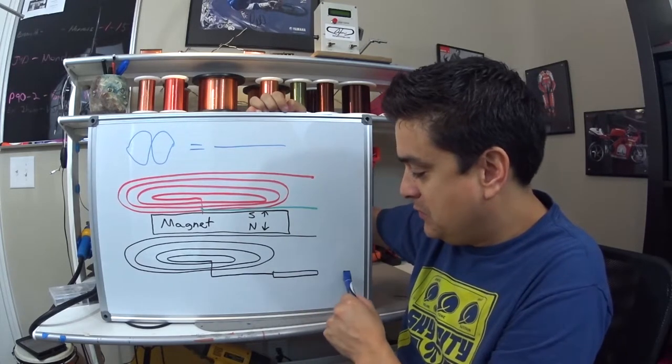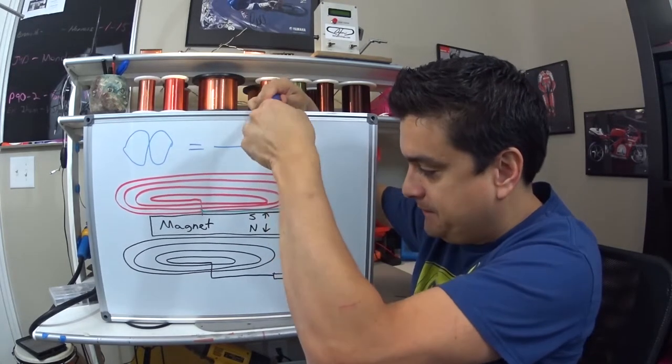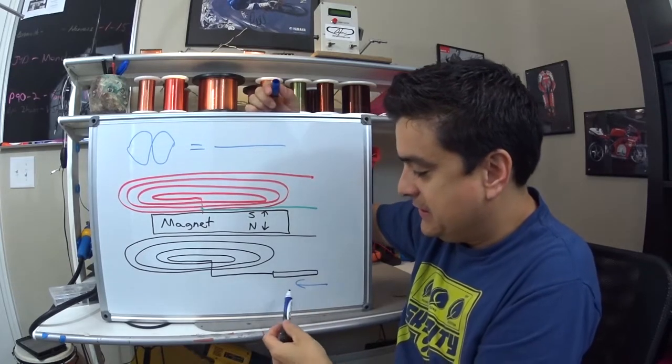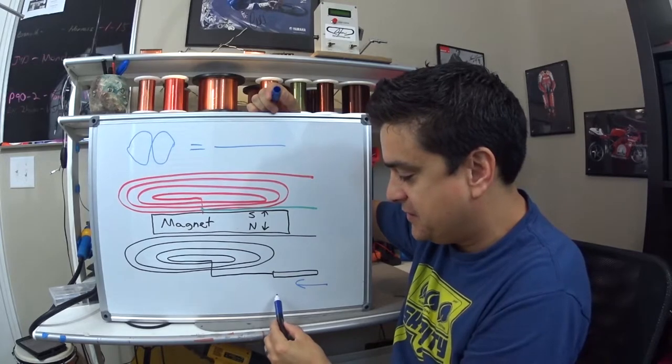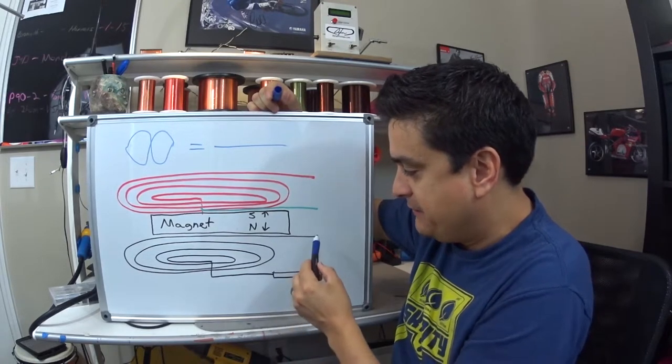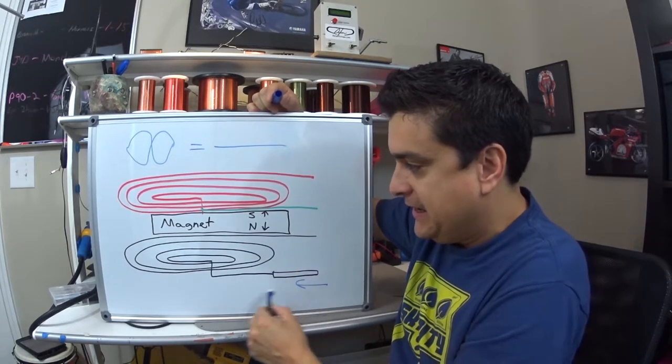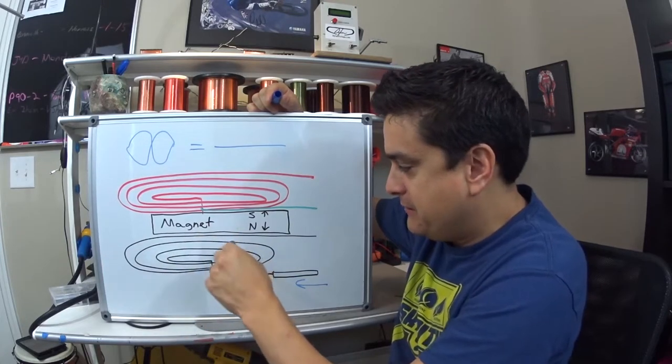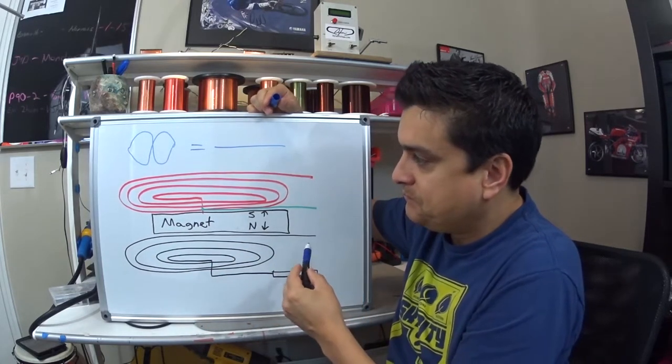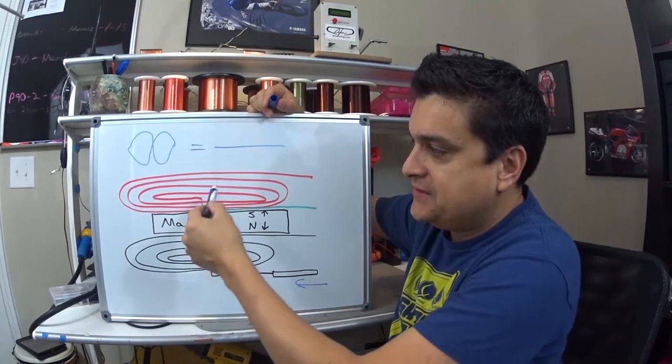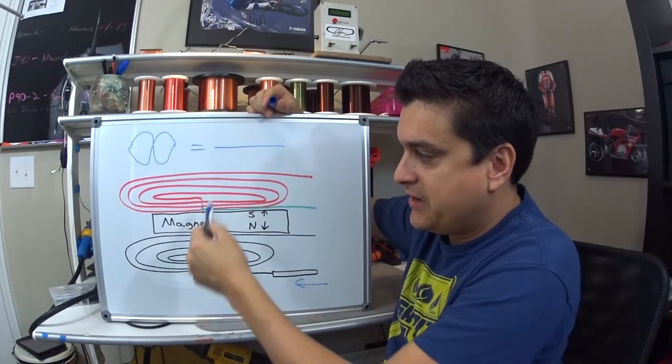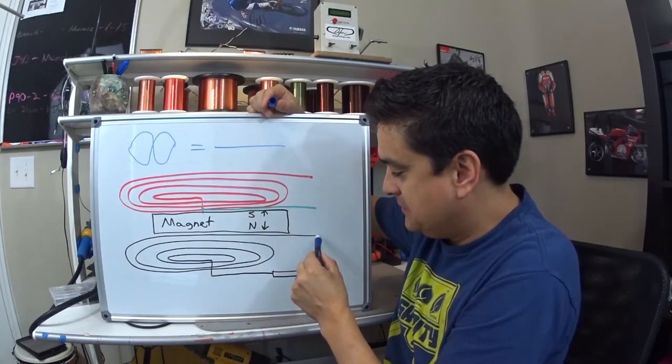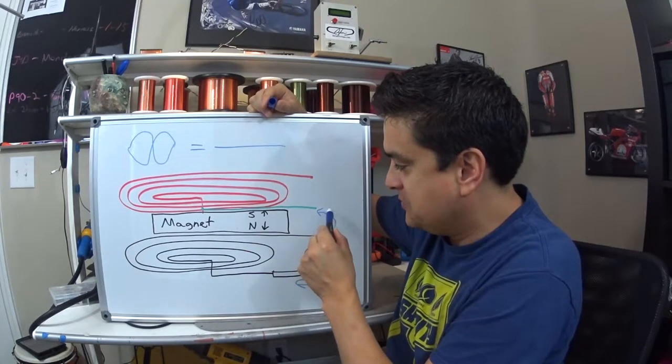So if the signal comes in this way and it goes around the coil and it comes out, we have the start of a coil down here and we have a finish of a coil up here. It comes in and it goes around and it comes out. Notice that I've drawn these the same direction.